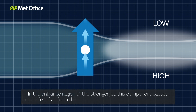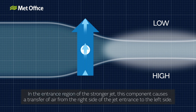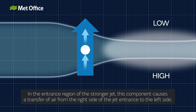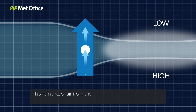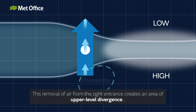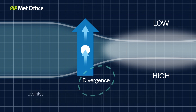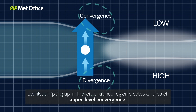In the entrance region of the stronger jet, this component causes a transfer of air from the right side of the jet entrance to the left side. This removal of air from the right entrance creates an area of upper-level divergence, whilst air piling up in the left entrance region of the jet creates an area of upper-level convergence.